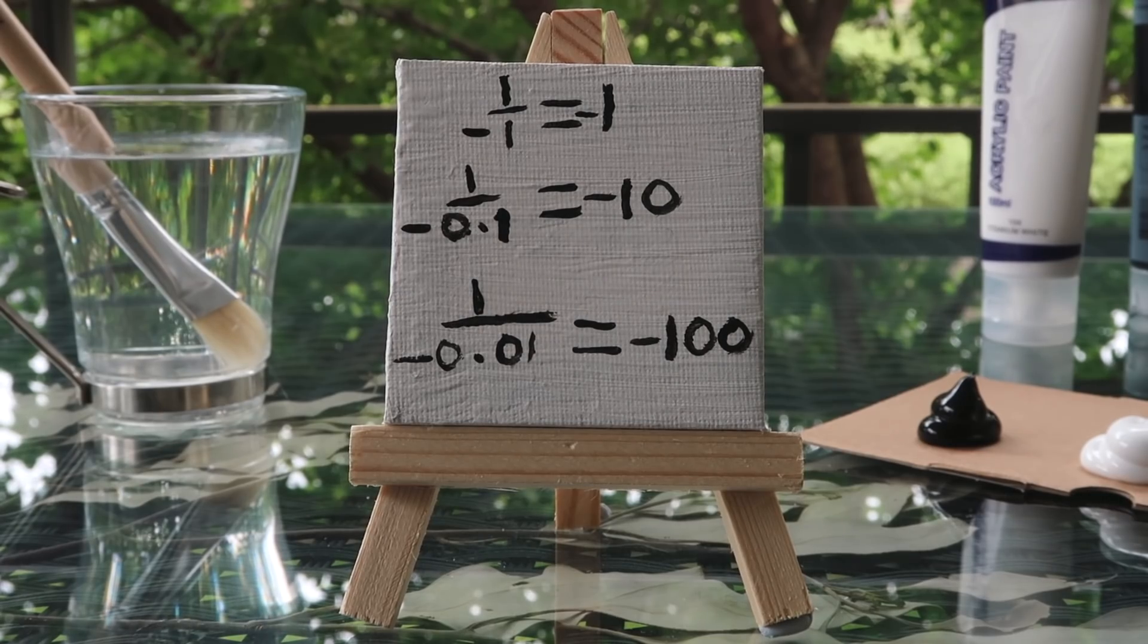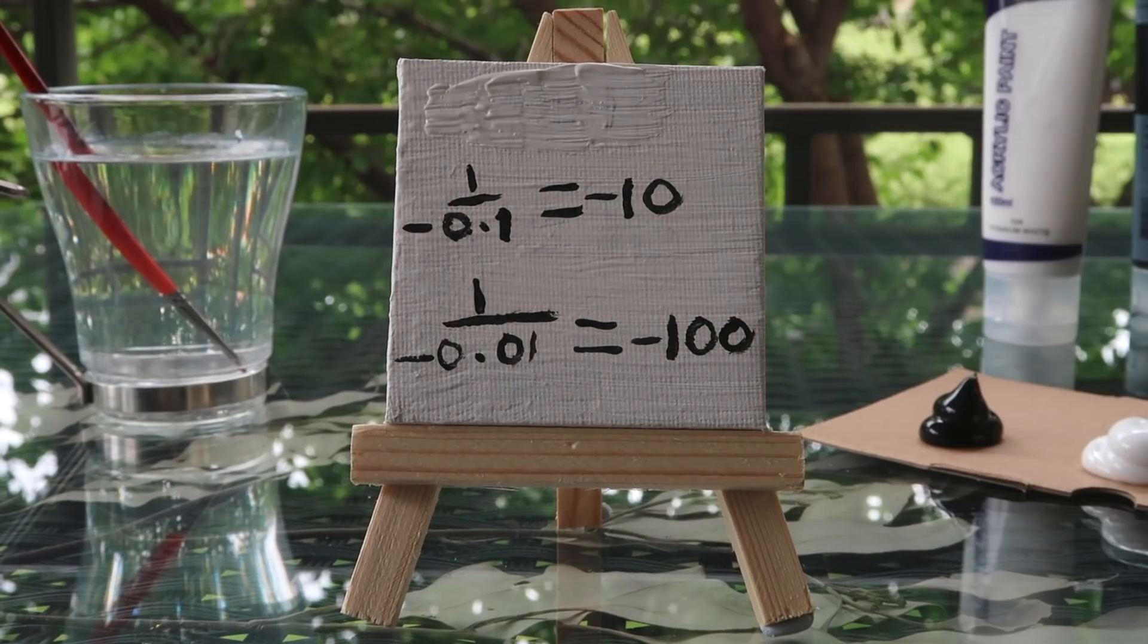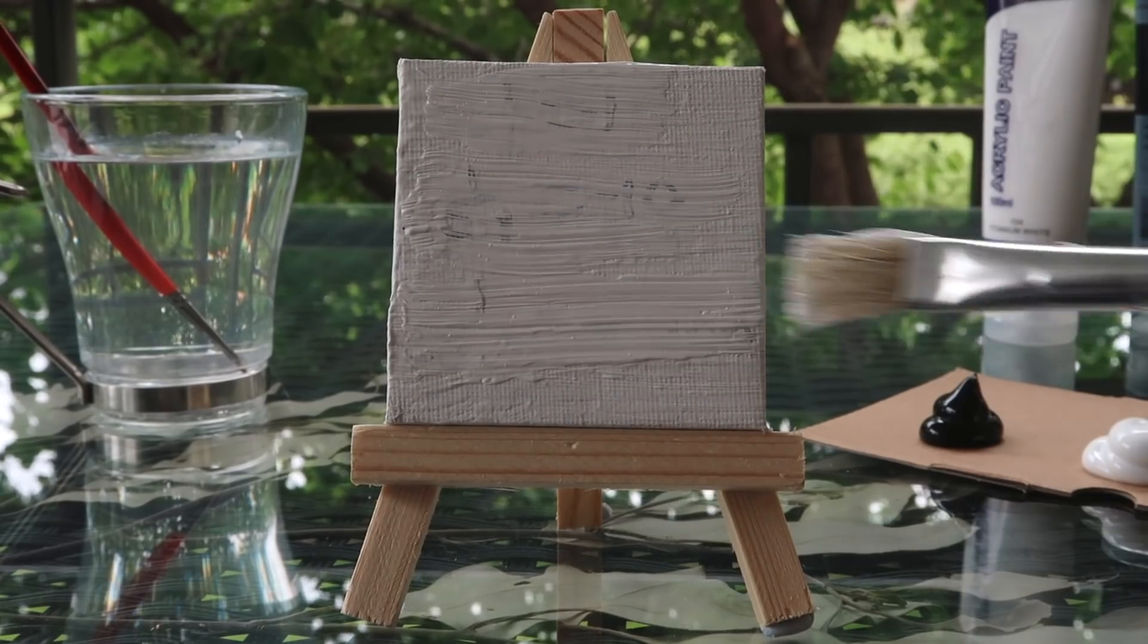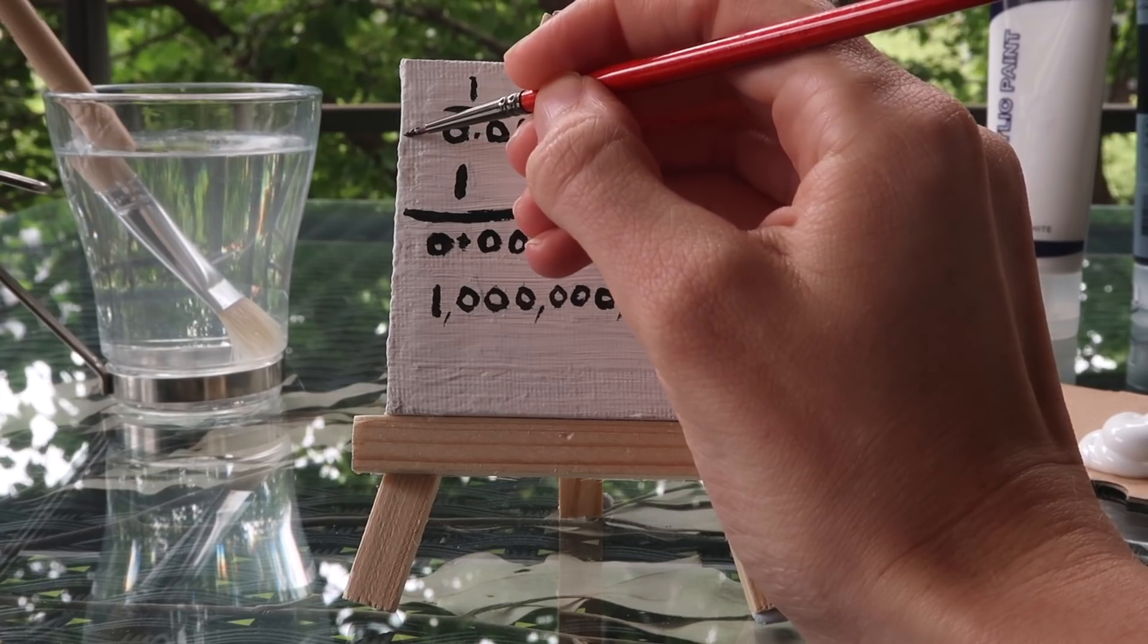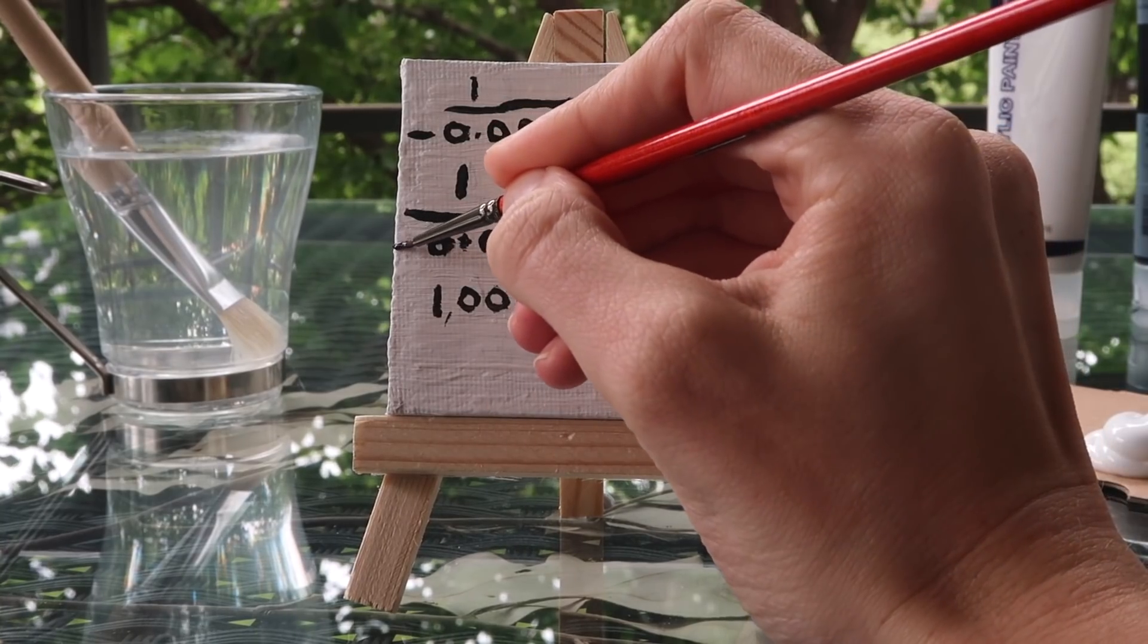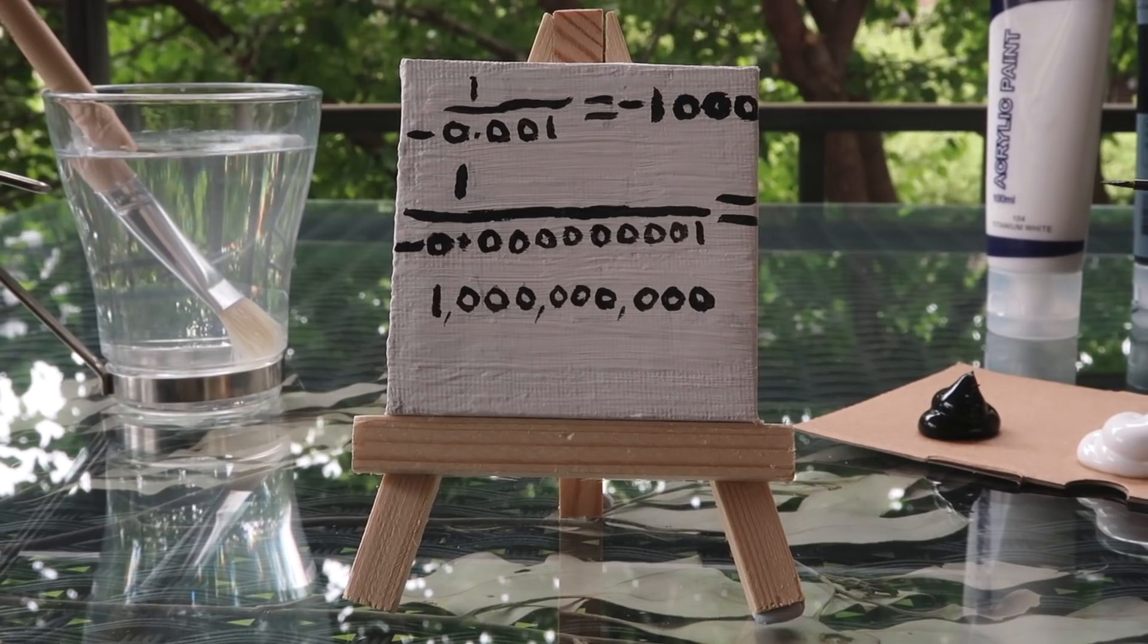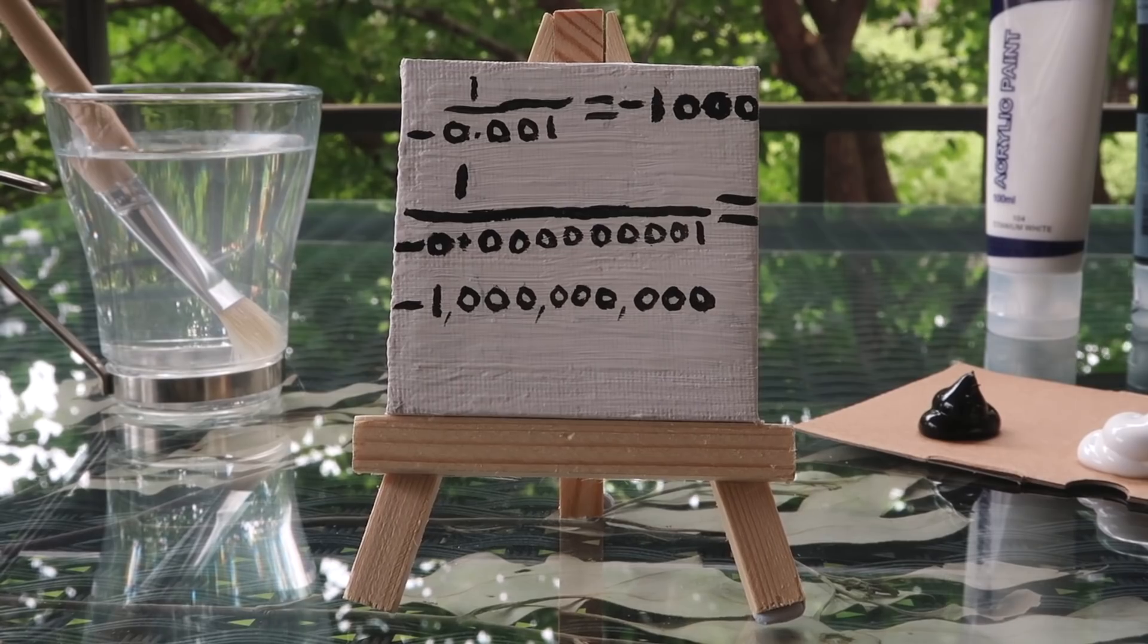This time when we move the decimal point over 1, we are getting 10 times closer to 0 and our answer is getting 10 times smaller. 1 divided by negative 0.001 is negative 1000. 1 divided by negative 0.000001 is negative 1 billion.